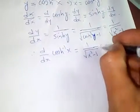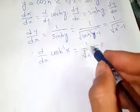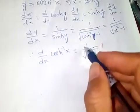Many books and authors write that the derivative of cosh⁻¹(x) is negative, but it is not minus. It is positive.